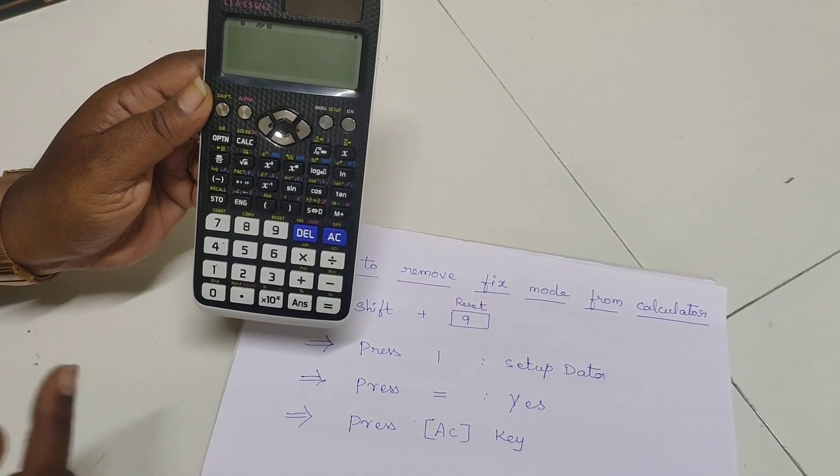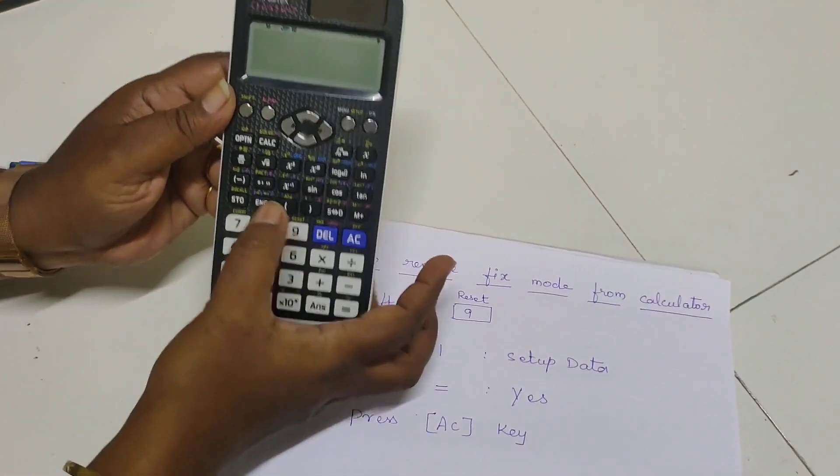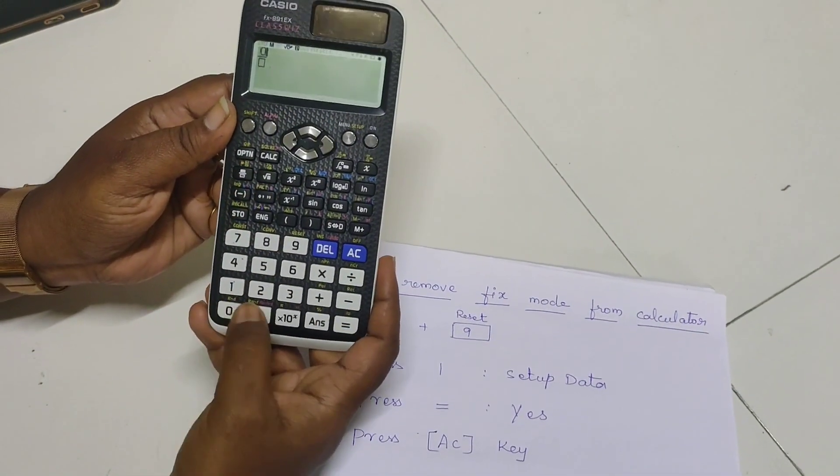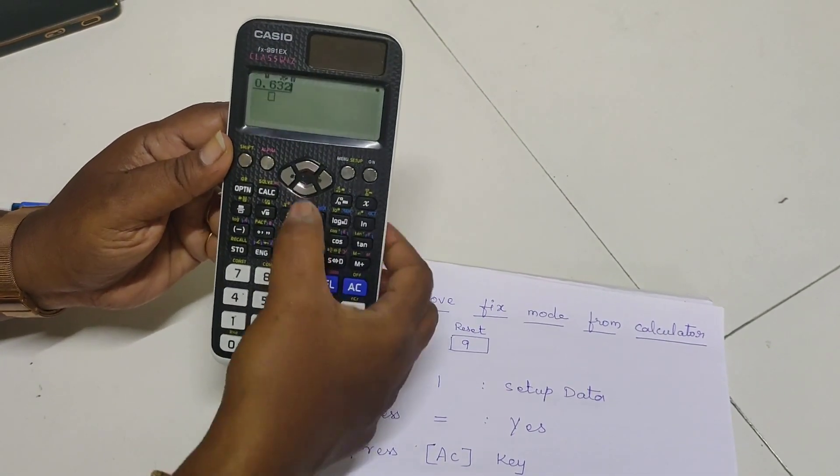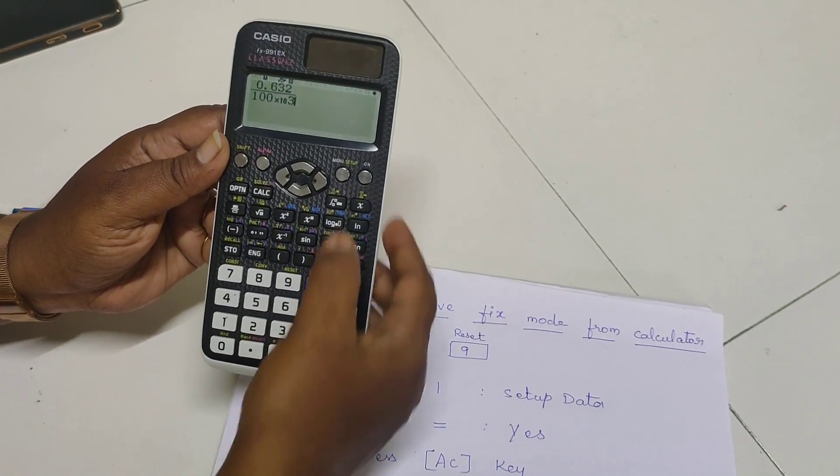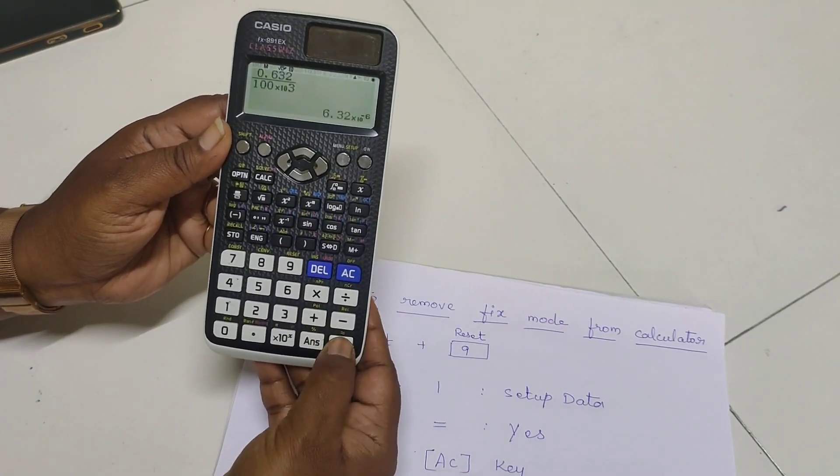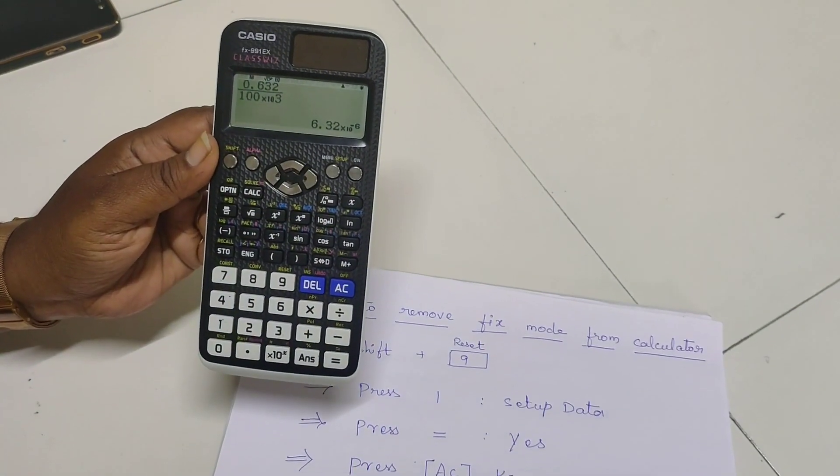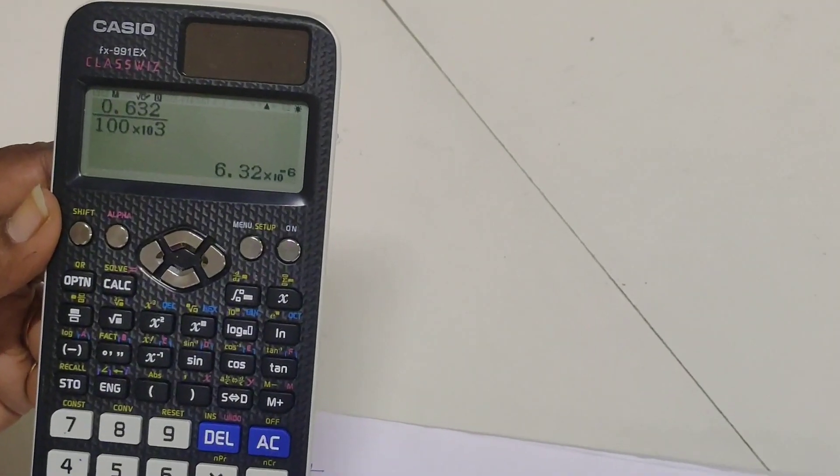Now, I will show the same calculation and what is the answer for that. What we have taken the example 0.632 by 100 into 10 to the power of 3. Right button press equal to. See the value now 6.32 into 10 to the power of minus 6.